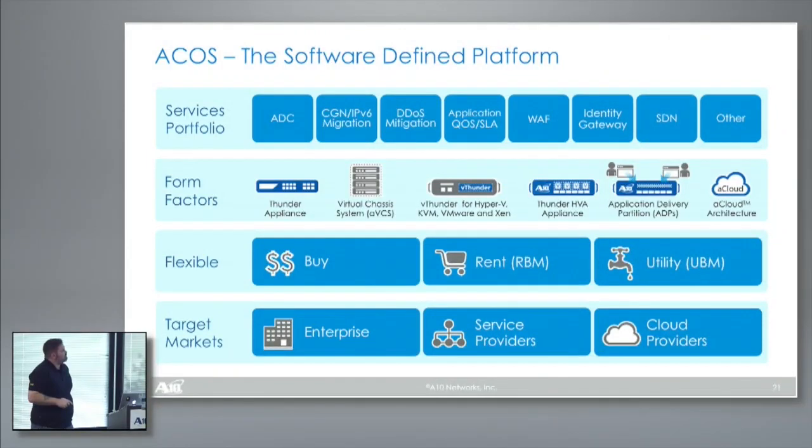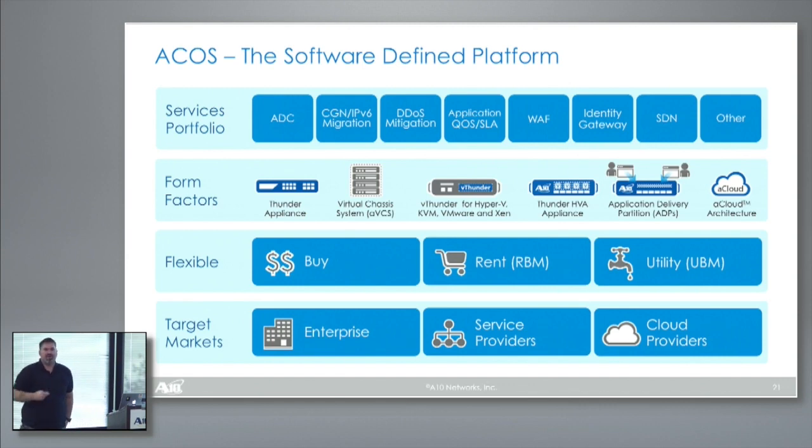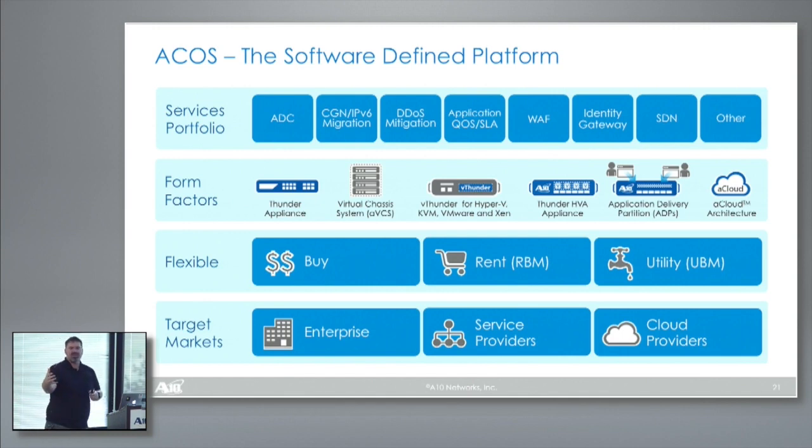We have our V Thunder, which runs on Hyper-V, KVM, Xen, and ESX — the majority of hypervisors. We have our HVA appliance, where we're running KVM and using SR-IOV to take advantage of SSL processors and our hardware onboard, plus direct connect to the Ethernet interfaces. This is really useful when you have heavy hardware SSL requirements that software just isn't going to cut, but you still need the segmentation, isolation, and API flexibility. Then we have our ADPs with user space separation, and our A-Cloud architecture with all these services.